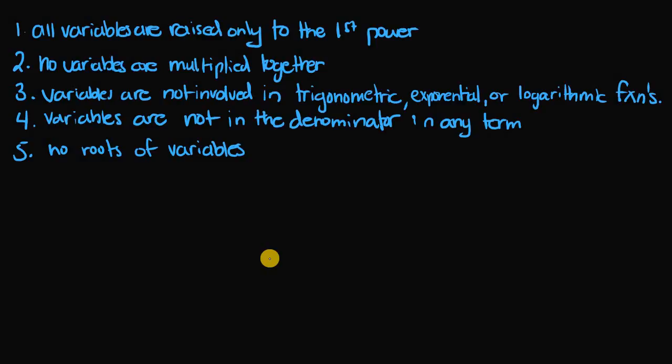Variables are not in the denominator in any term, so you don't have something like 4 over x. And finally, there are no roots of variables, so you don't have something like x to the one-half power or square root of x. So let's start running through examples and talking about whether these equations are linear or nonlinear.